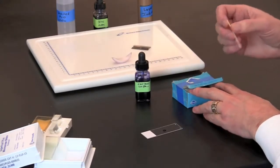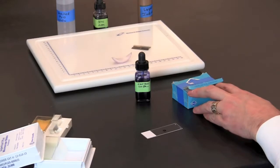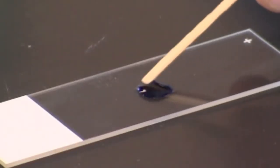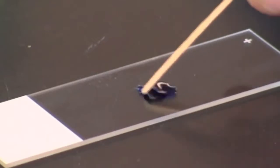Use the blunt end of a toothpick to scrape the inside of your cheeks. Place the toothpick into the drop of stain on the slide and swirl it to release the cells into the stain.